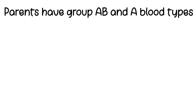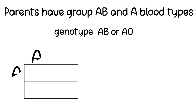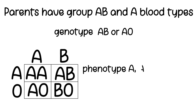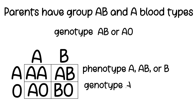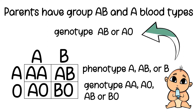Here is another example. One parent's blood type is AB, and the other parent's is A with the genotype of AO. The offspring can have one of three blood types: A, AB, or B. This can also be used backward, which means if you know the baby's blood type, we can try to find out the parents' genotype.